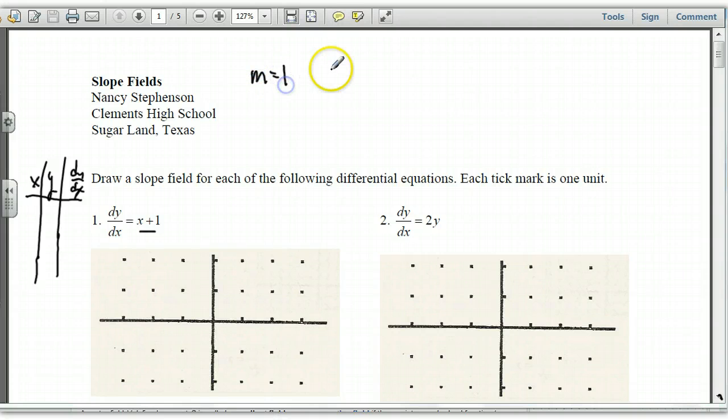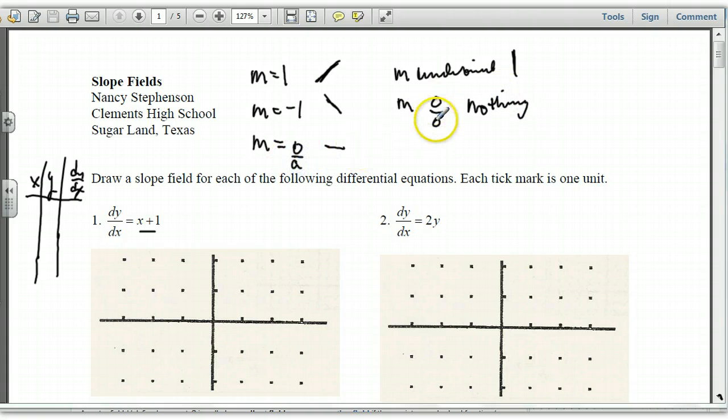So if my slope is 1, slope of positive 1 is a 45. So I make a little segment like that. If the slope is negative 1 then it's going to be a 45 down here. If I have the slope of 0 it's going to be a horizontal line. If my slope is undefined then we have a vertical line. And then the last one is if my slope is 0 over 0, I have nothing. Slope of 0 over anything besides 0 is going to be 0. So this would be a horizontal slope.